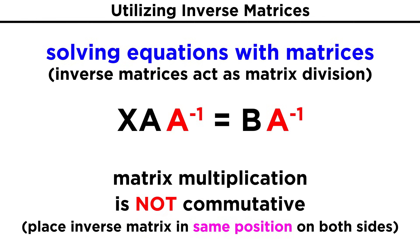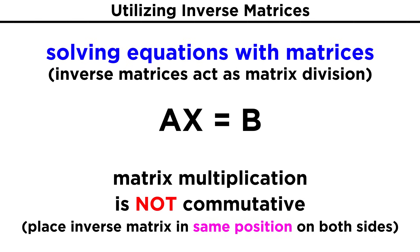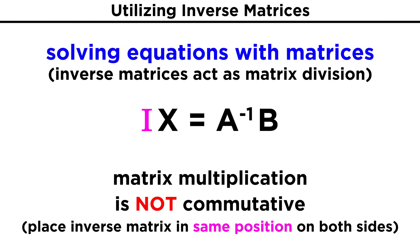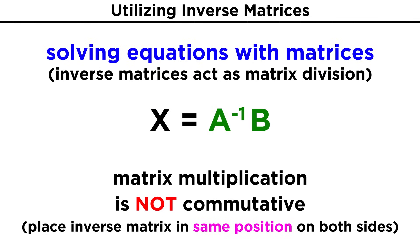Don't forget that matrix multiplication is not commutative. So wherever we place A inverse on one side, we have to place it the same way on the other side — in this case as the rightmost entry on each side. If the original equation was A times X equals B, we would have to place A inverse all the way on the left, because A inverse times A should also equal the identity matrix, in which case the right side must be A inverse times B, and not B times A inverse.